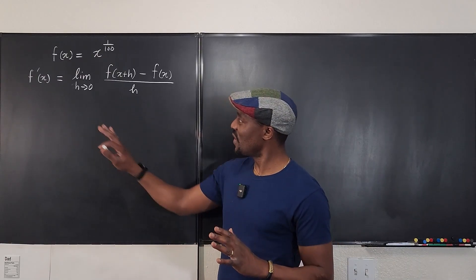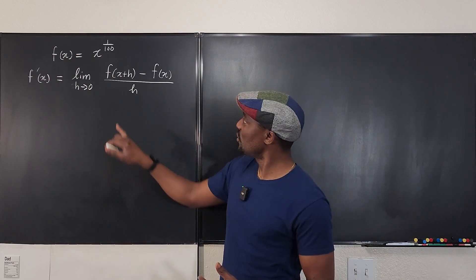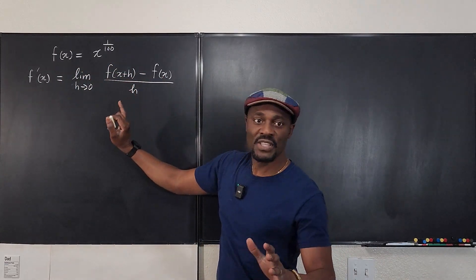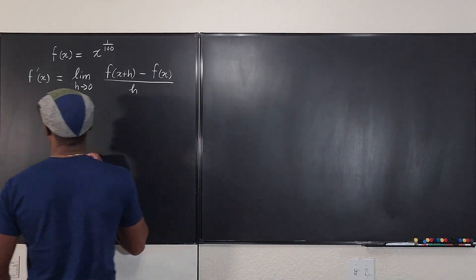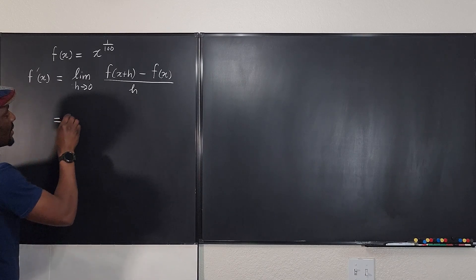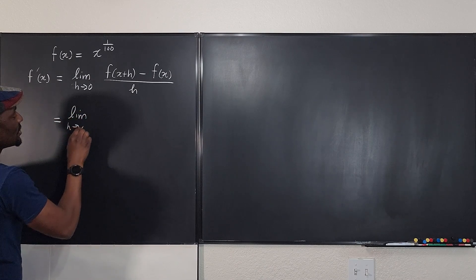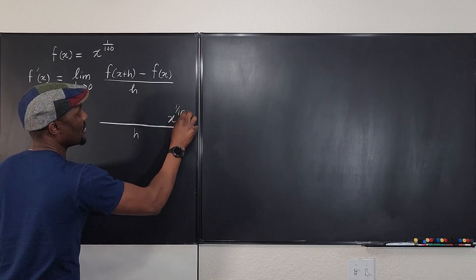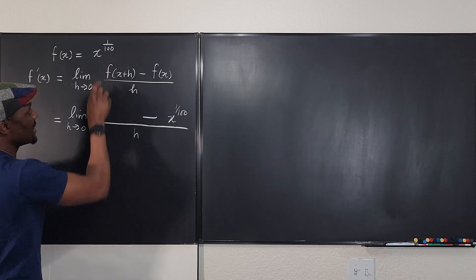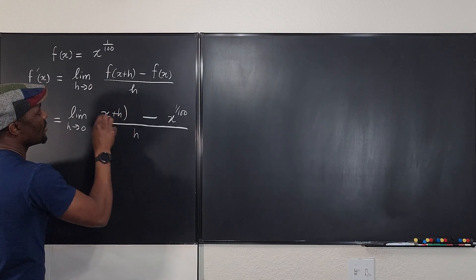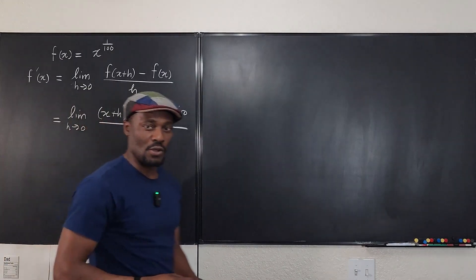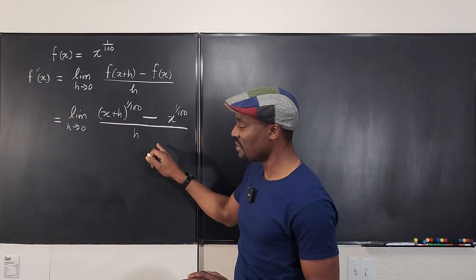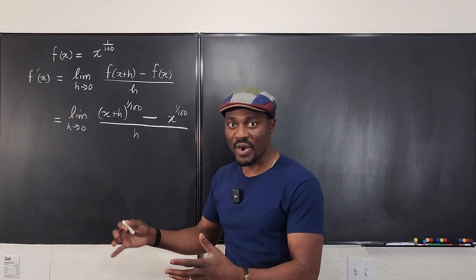So like I always say, the first thing you do when taking derivatives from first principles is to copy and paste. You see this f of x — just put it here. And wherever you see x, replace it with x plus h. So the derivative is equal to the limit as h goes to zero. I'm going to write x to the one over 100 with a minus sign, and here it's going to be x plus h raised to the power one over 100. Remember, taking derivatives from first principles requires that you simplify the numerator — the denominator is usually never the problem, it's always the numerator.